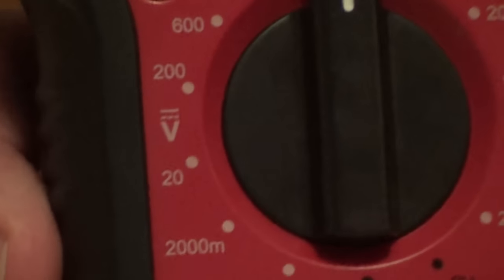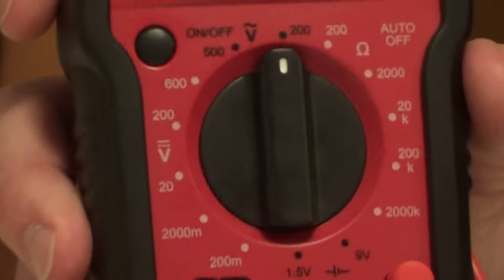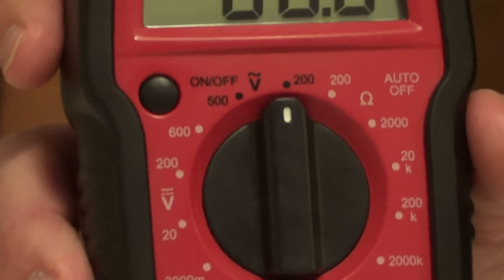You would use these settings. Let's say you're checking a car battery, you would use the 20, so it's the number that's just higher than the number you're looking for.